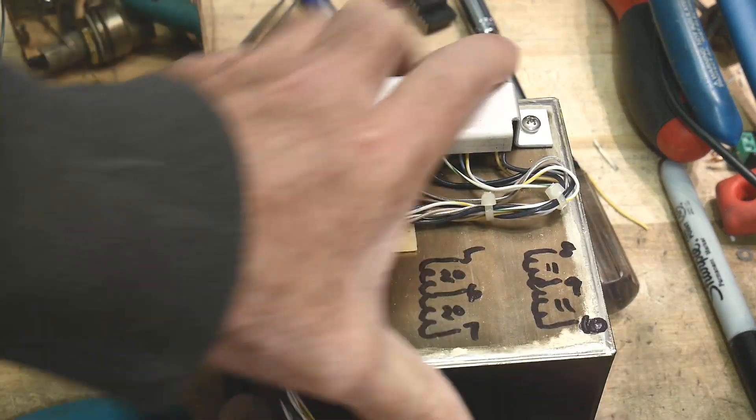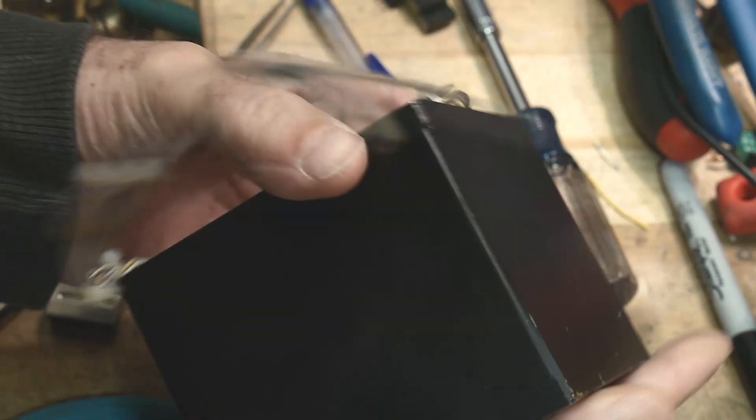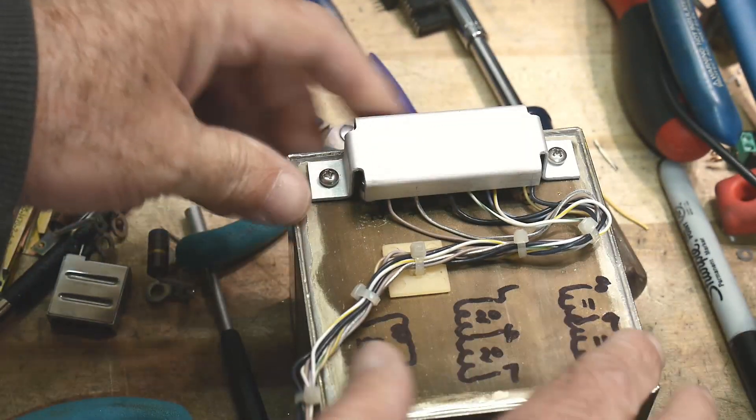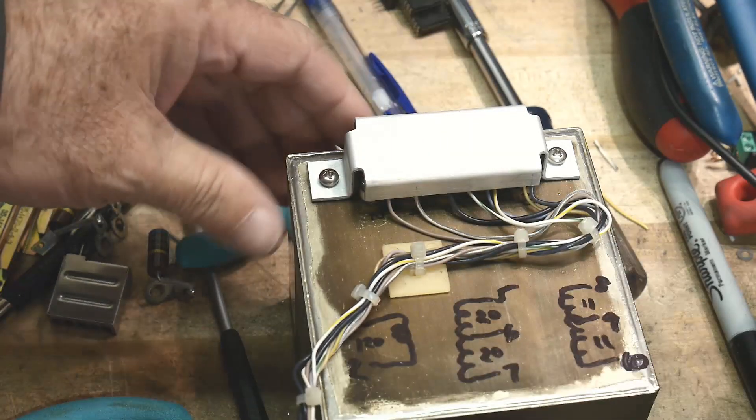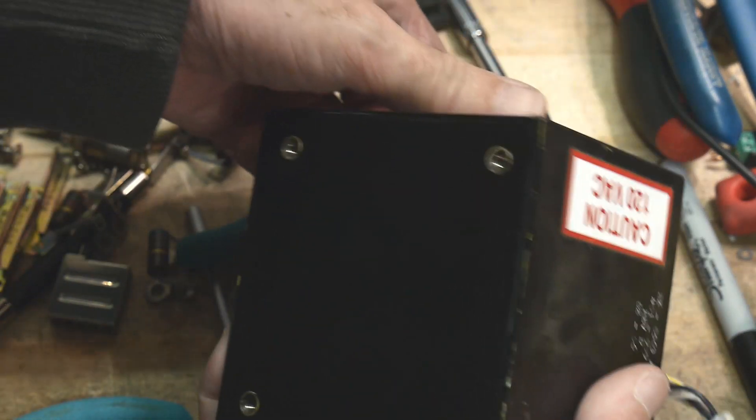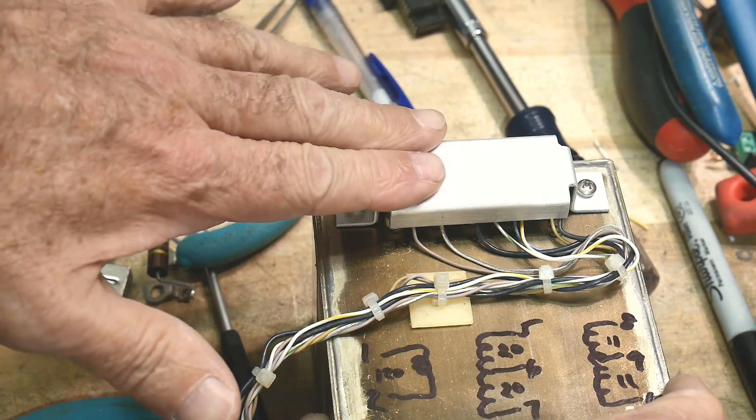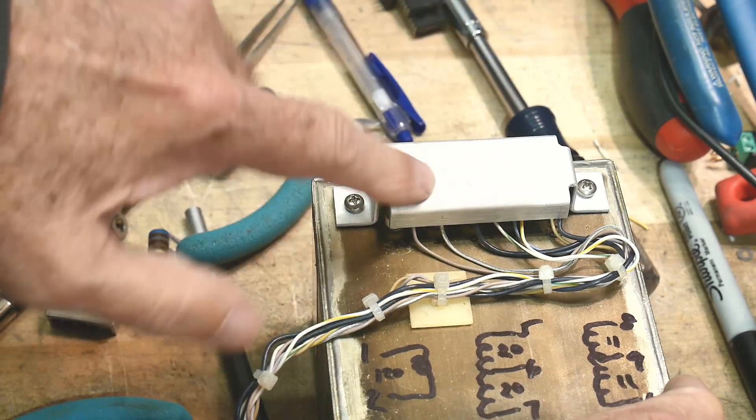Then there's this monstrous transformer. This thing is definitely over 10 pounds and it's soldered shut and hermetically sealed. This thing is a beast. It's wired for 120 but it looks like it could run off 220. It looks like there's jumpers on there.